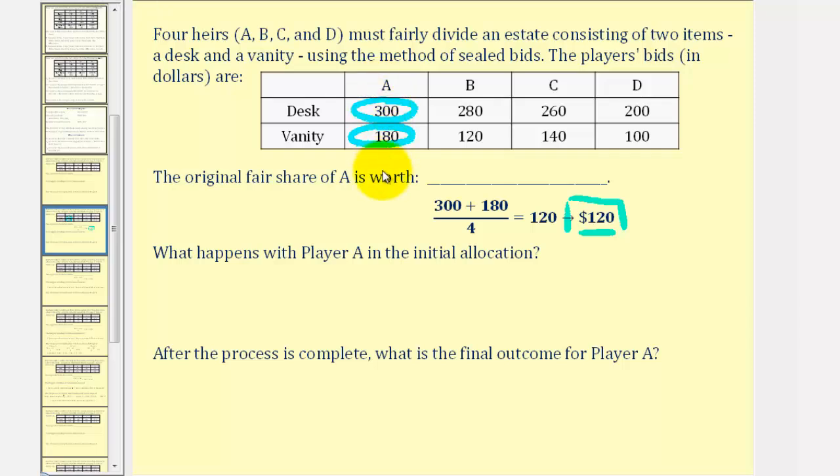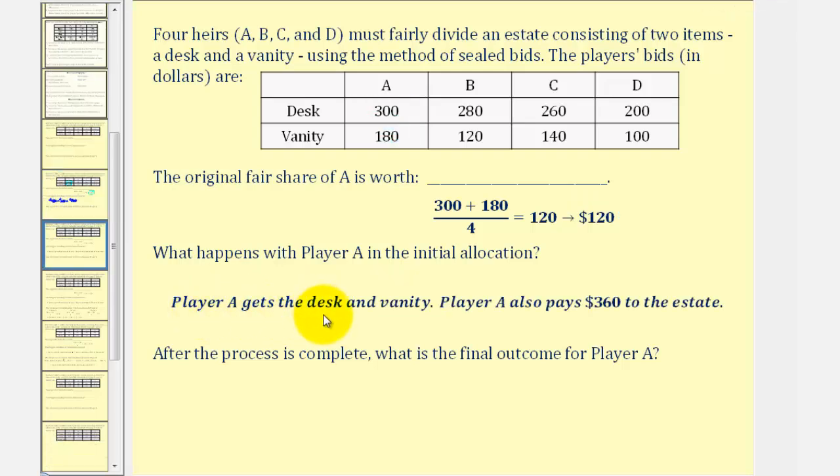But notice how the value of the desk and vanity would be 300 plus 180, or $480. But since player A's fair share is only $120, player A will have to pay the difference in cash to the estate: $480 minus $120 equals $360. So after the initial allocation, player A gets the desk and vanity but also pays $360 to the estate.